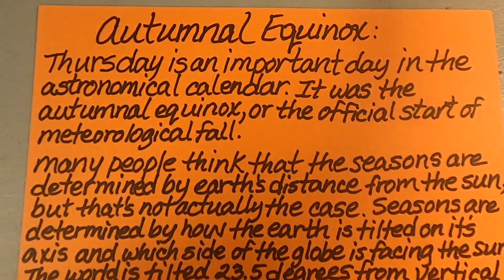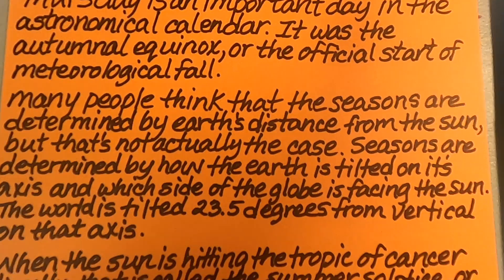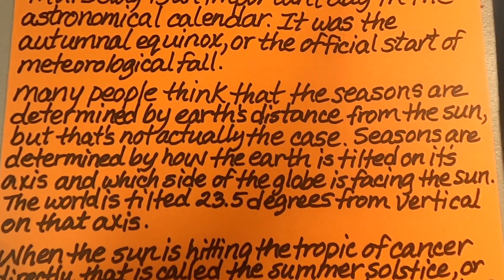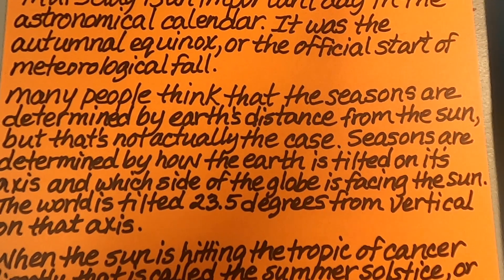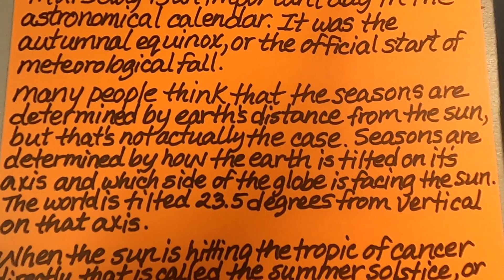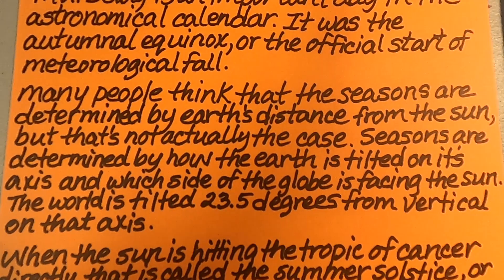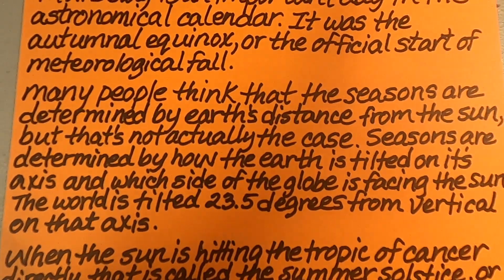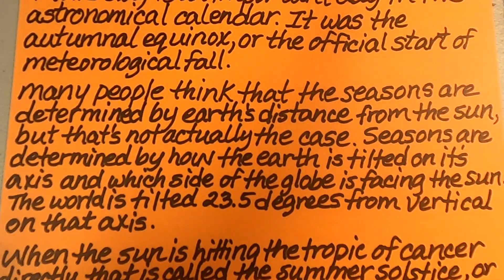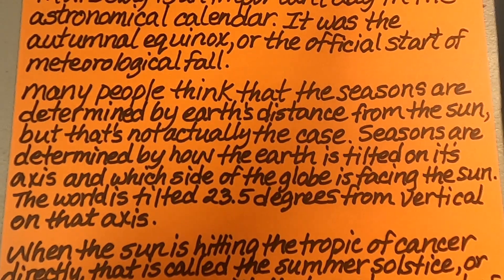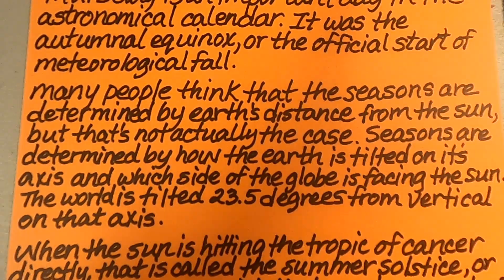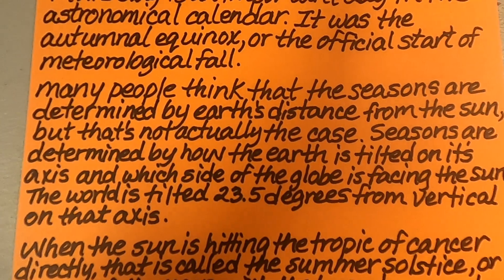Many people think that the seasons are determined by Earth's distance from the sun, but that's not actually the case. Seasons are determined by how the Earth is tilted on its axis and which side of the globe is facing the sun. The world is tilted 23.5 degrees from vertical on that axis.